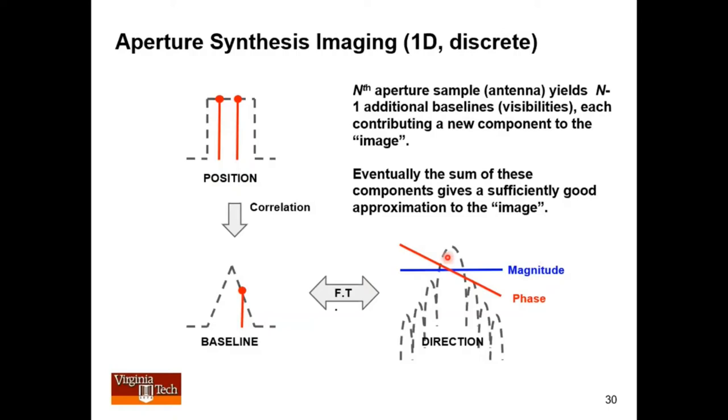And if you Fourier transform an impulse, we all know that you get uniform magnitude and a phase, which corresponds to the delay here. So the delay is large, you get a big phase variation, a big slope. If you have a small delay, you get a small slope. But that one baseline provided one piece of information about the image.